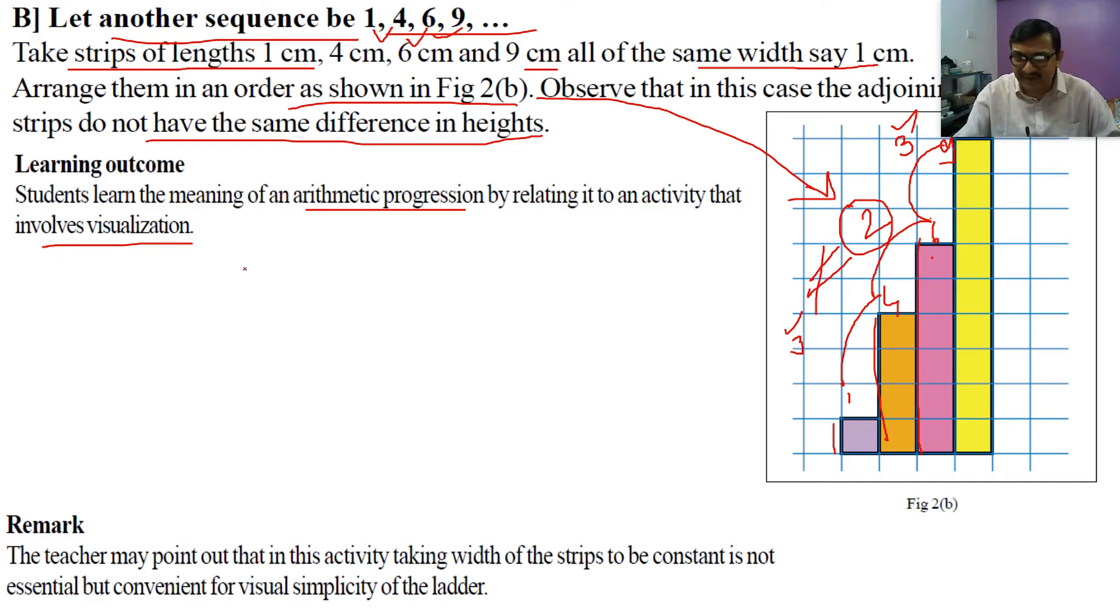Now I will explain on an algebraic basis. Suppose you are finding the difference, and the three terms taken initially were A1, A2, A3, and A4. How is the common difference coming? Second minus first: A2 minus A1. The second difference: A3 minus A2. This is the algebraic form, separate from the activity. The last one: A4 minus A3.